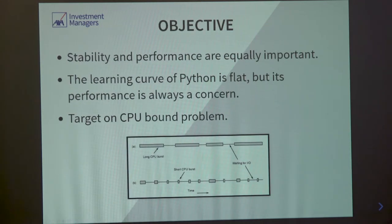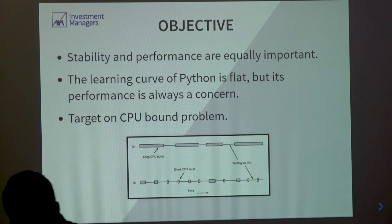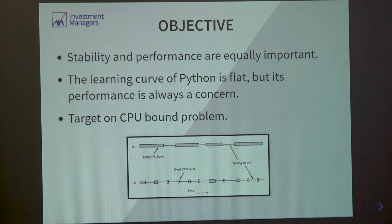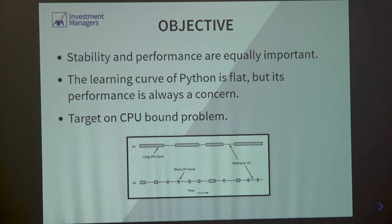Our objective today: I think we all agree that performance and stability are both equally important. We don't want our code to have any bugs, but at the same time, especially when we release our software, the first question the client asks is whether we can enhance the performance. Everyone in my firm, even the quants and the portfolio managers, knows how to code in Python. But performance is always the painful part in Python.